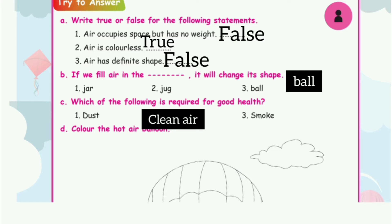Third one: air has definite shape. The answer is False. Then the next question: if we fill air in the dash, it will change its shape. The answer is True.